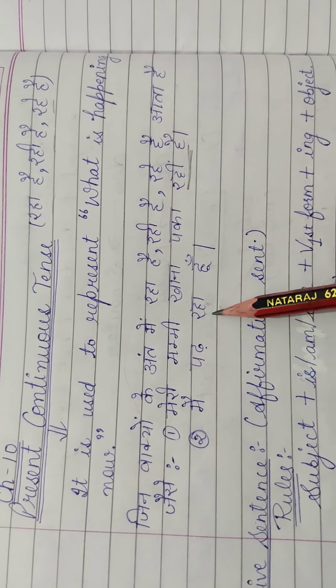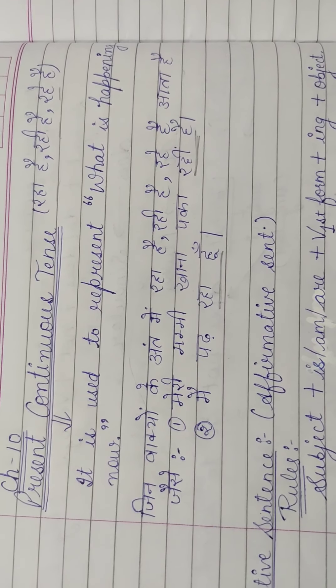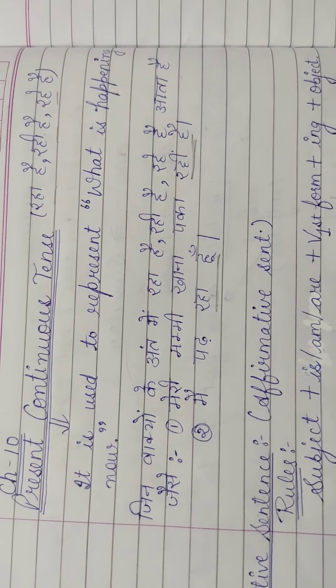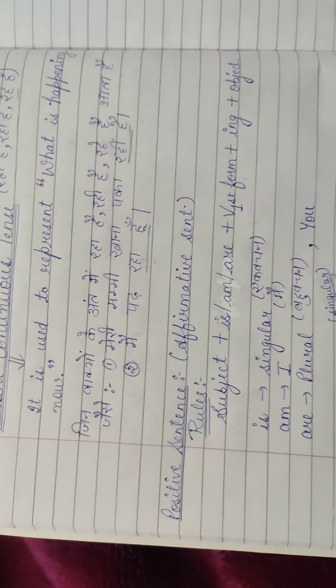Jaisi ki meri mammi khana paka rahi hai, mai padh raha hun. To is tari ke sentence me hum continuous tense ka use karate hai. Jo chiz is time per chal raha hai. What is happening now?